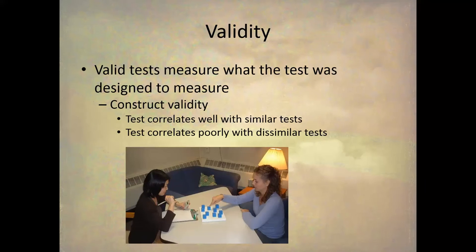Now let's say that we found a test and it has validity and reliability information, or we want to create a test and so we need to generate our own validity and reliability information. What are these concepts? First off, validity: a valid test measures what it was designed to measure.